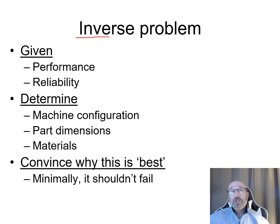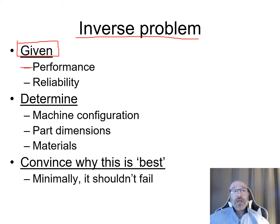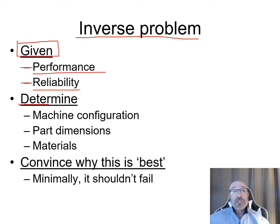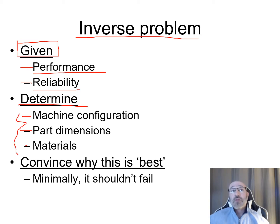For an inverse problem, what we're given is different. Rather than being given the specifications as in a forward problem, we're given information about what the performance and reliability needs to be — not specifying exact materials or dimensions, but how it needs to perform. From that, we need to determine the machine configuration, part dimensions, and materials.